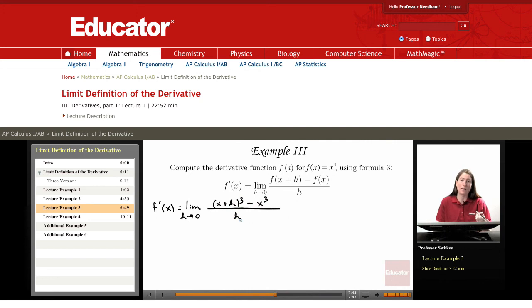And again our job now is to simplify this fraction and then at the end to take the limit as h approaches 0. So continuing on we have the limit as h approaches 0 of the fraction. And in the numerator we need to expand out the x plus h cubed.